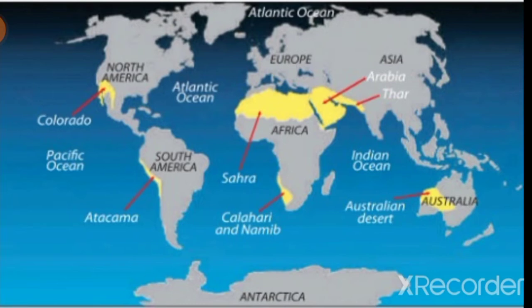Globally, deserts are located between 15 up to 30 degrees north and south.